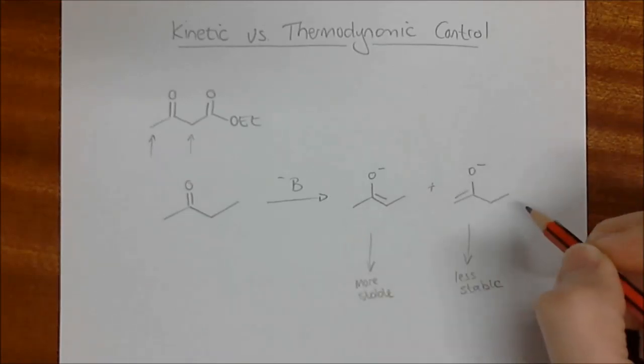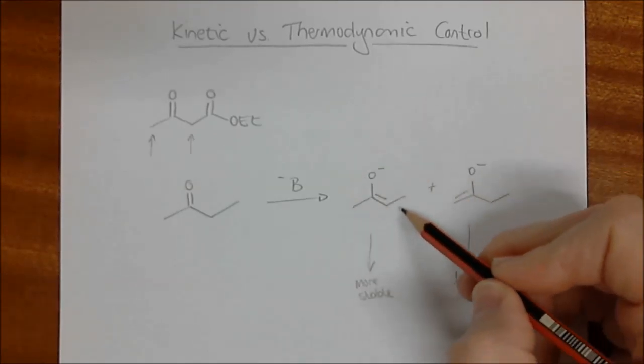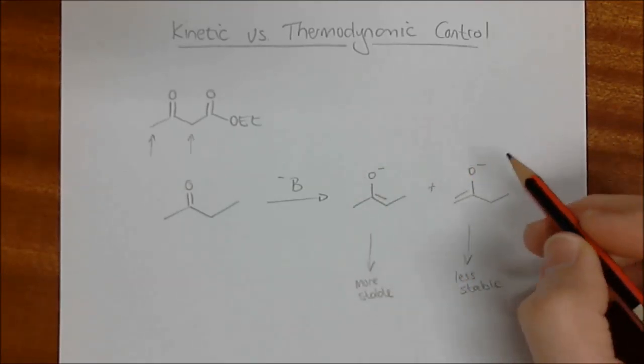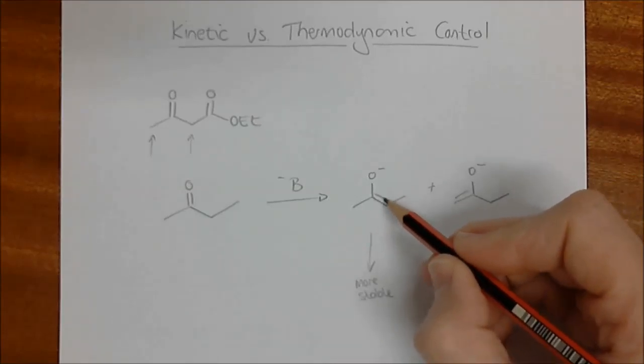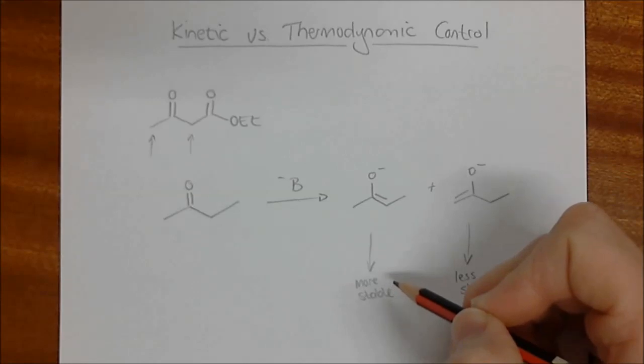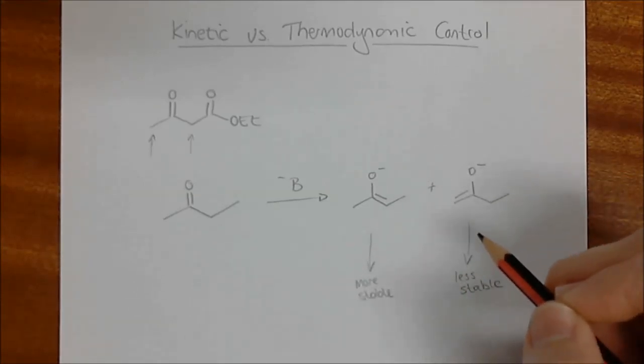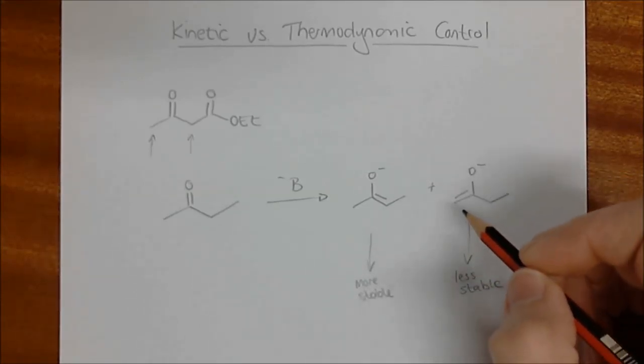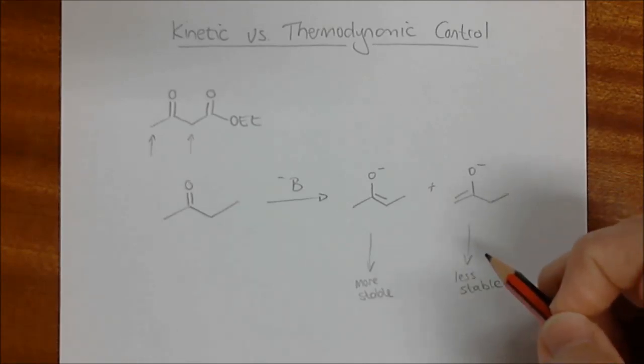And these lend stability overall to double bonds. So looking at these two, we can very quickly say that this is less stable than this one over here. Obviously things that lend stability like substitution on a double bond will make something more stable. And there can be other things that will make things more stable including conjugation, which is an important one as well.